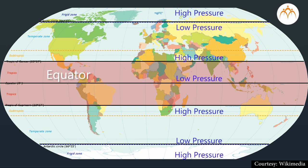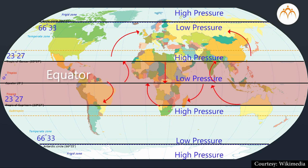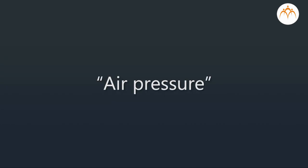Air pressure zones are created due to temperature zones. The unequal distribution of temperature affects the air pressure, thereby creating high and low pressure zones between the equator and both poles at horizon level. We have already learnt this in the lesson titled air pressure.